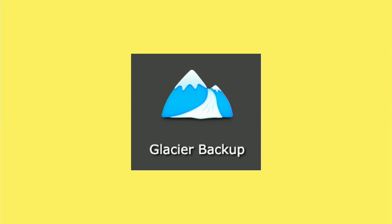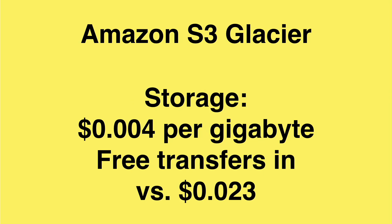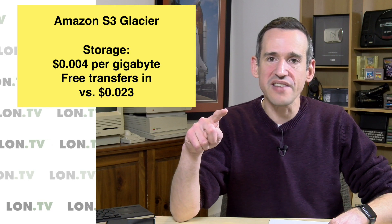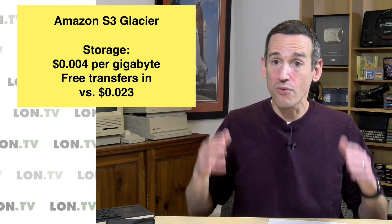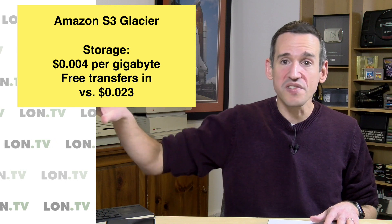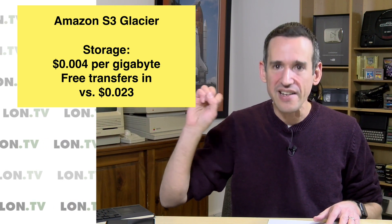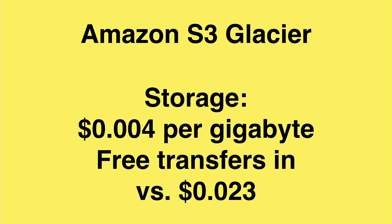Let me show you why Amazon Glacier is different. To store data on Amazon S3 Glacier, you're going to pay less than half a penny per gigabyte in the United States — very cheap. That's versus about 2.3 cents per gigabyte using regular Amazon S3. S3 is something you can access whenever you want. The audio version of this show is a podcast hosted in S3, so anytime somebody wants to download it, S3 delivers that file — convenient, but a more expensive storage option.